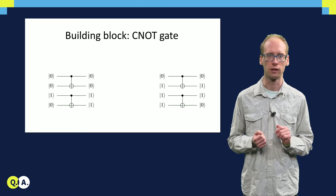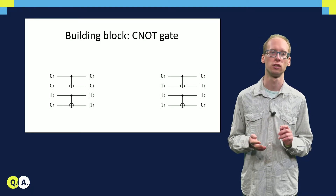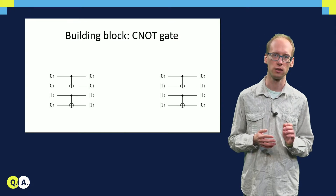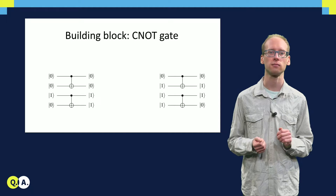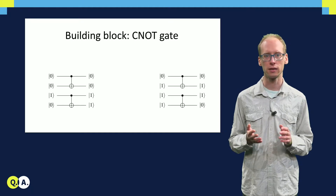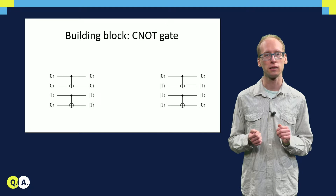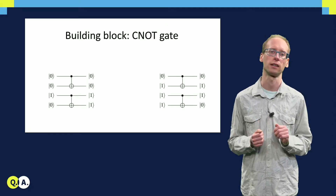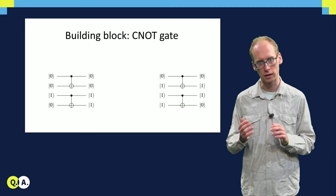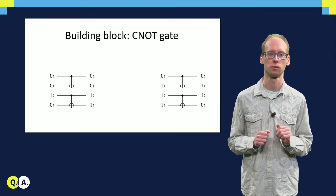Now, in the quantum case, our first controlling bit can be in superposition of 0 and 1, in which case in superposition we flip and don't flip the second bit. This effectively allows us to correlate the two qubits, which in other words transfers certain information about the first qubit to the second one. This correlating property will be crucial in our distillation procedure.